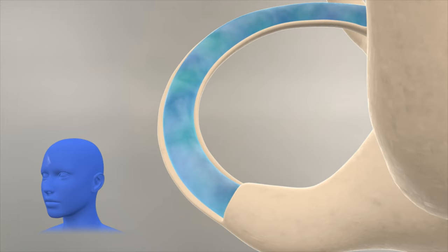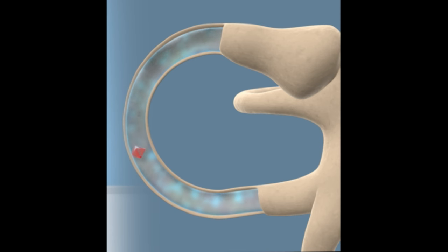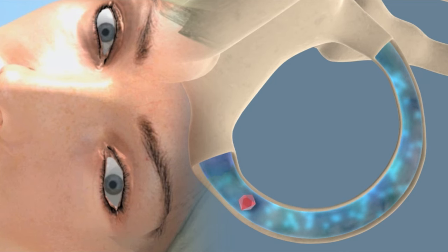However, should a crystal called an otolith get displaced into the lateral or horizontal canal of the inner ear, BPPV dizziness occurs. Fluid movement occurs due to the crystal rather than head turns, causing the brain to think movement has occurred even though none has happened.